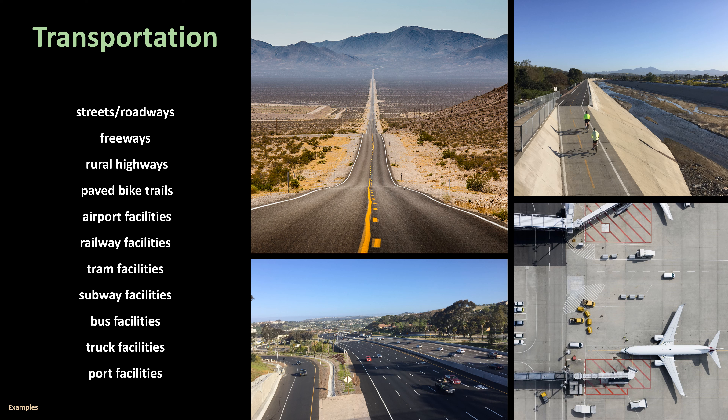Residential. Examples include urban neighborhoods, rural single-family residences, mobile home parks, and multi-unit residential complexes such as apartments, townhomes, and condos.